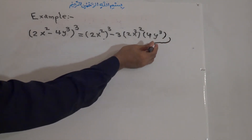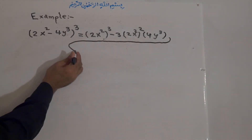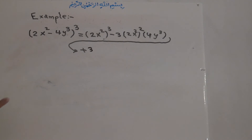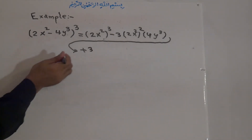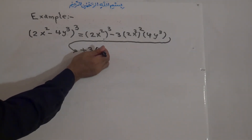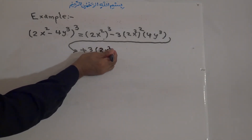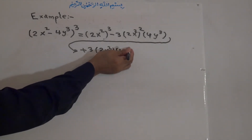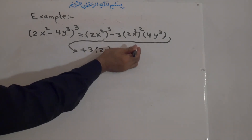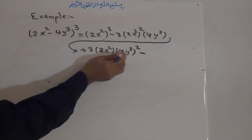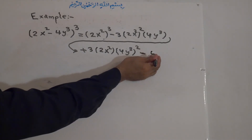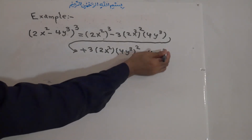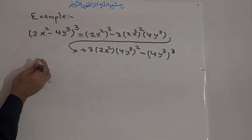Then, plus 3 times the first term 2x squared, times the second term 4y cubed, all squared. And then minus the second term, 4y cubed, all to the power of 3.